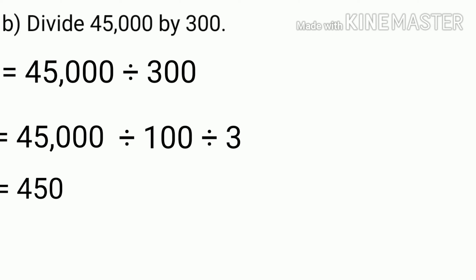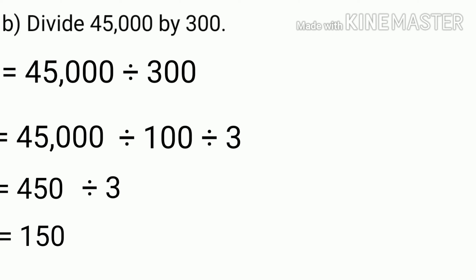Since we have removed two zeros from 45,000. Now, we can divide 450 by 3. After dividing 450 by 3, we get 150 as the quotient. So, 45,000 divided by 300 is 150.